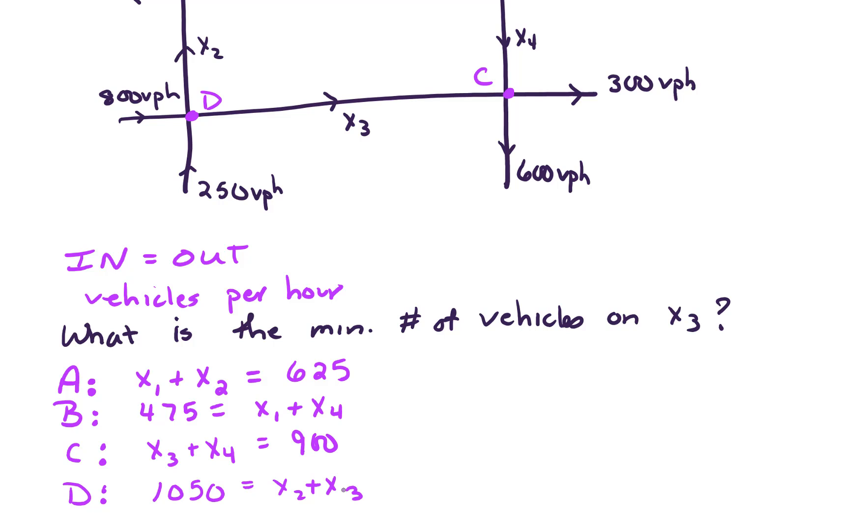If we put this in an augmented matrix, we get 1 1 0 0 625, followed by 1 0 0 1 475, 0 0 1 1 900, and 0 1 1 0 1050.